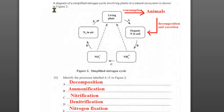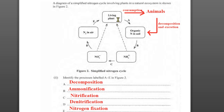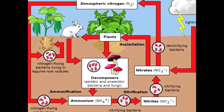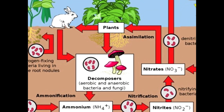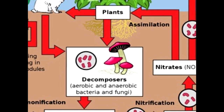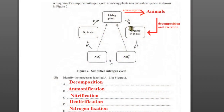Let's look at the other part of question 1a: a diagram of a simplified nitrogen cycle involving plants and a natural system is shown in figure two, with five processes labeled A to E. Process A is decomposition — living plants break down organic matter, decomposed by bacteria and fungi, and all of the nitrogen returns to the soil. Process B is ammonification, where putrefied material turns into ammonia and ammonium ions.